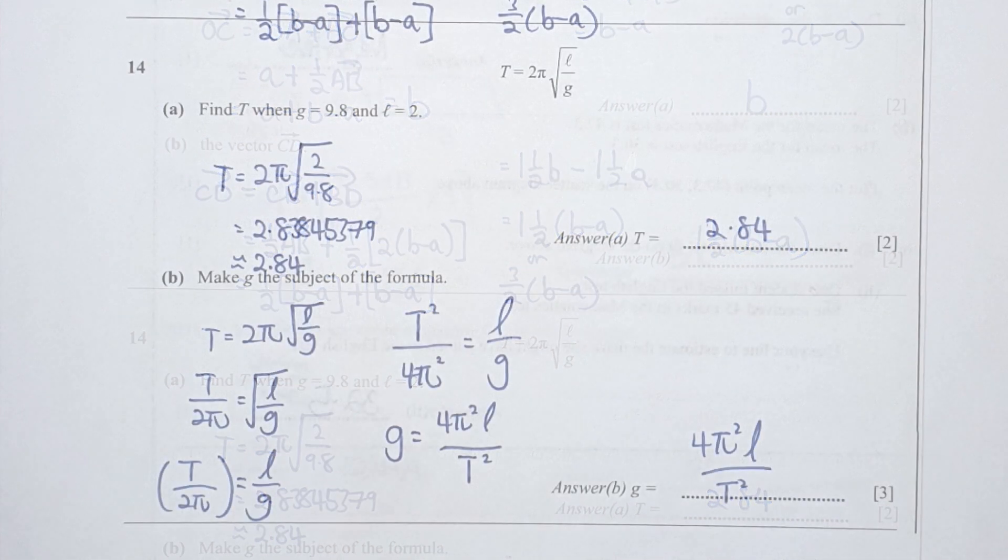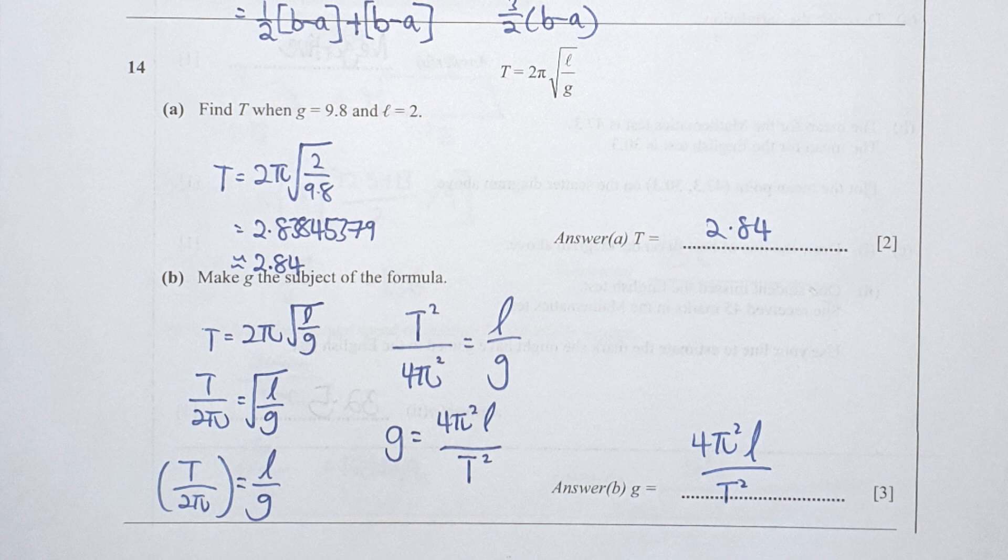Question 14: simply substitute 9.8 and 2 into its respective position. By doing so, you get your outcome as 2.84, and to rearrange g into the subject, you can just follow my workings there and get your answer.